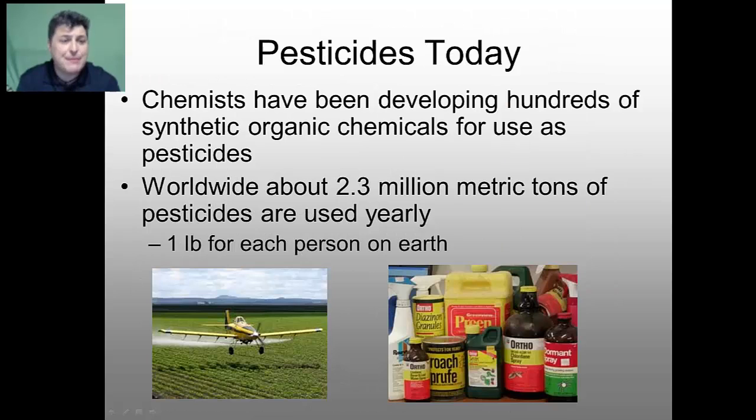Chemists have been developing hundreds of synthetic organic chemicals for use as pesticides. In fact, worldwide, about 2.3 million metric tons of pesticides are used every year — about a pound for each person on Earth.